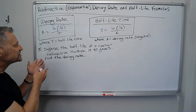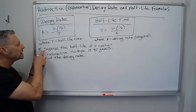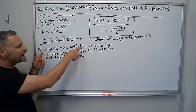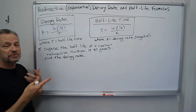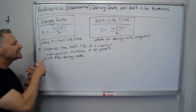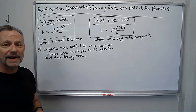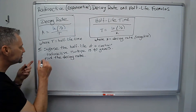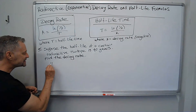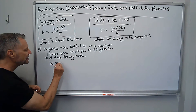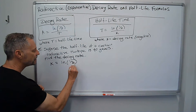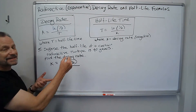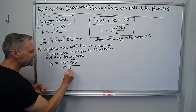Here's an example. Suppose the half-life of a certain radioactive isotope is 40 years — find the decay rate. So we can say the rate, that's k, it's ln of a half divided by the time, which is 40 years.